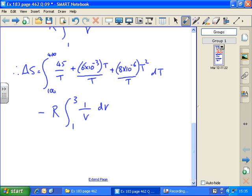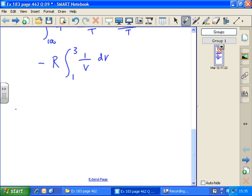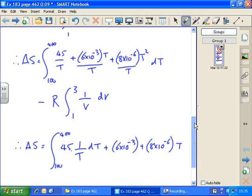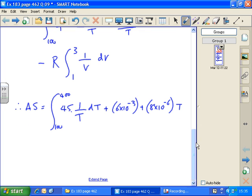Tidying up this first integral, we get integral between 100 and 400. I could take the 45 outside the integral, think of it as 45 times 1 over T with respect to T, plus 6 times 10 to the minus 3, because the T's cancel, plus 8 times 10 to the minus 6 T, because one of the T's cancel at the bottom into one of the top, with respect to T.